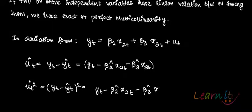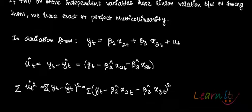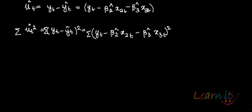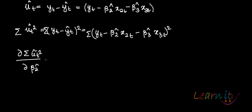You have the sum of squared residuals — summation of û_t squared — which includes the term β̂_3 x_{3t} whole squared. You can put the summation sign and solve this. You want to get the values for β̂_2 and β̂_3, so take the partial derivatives.